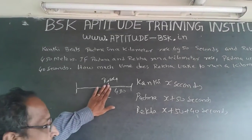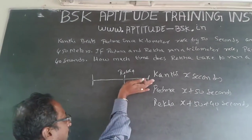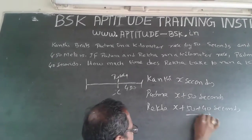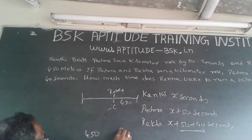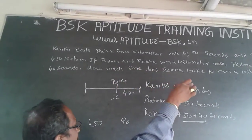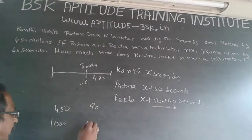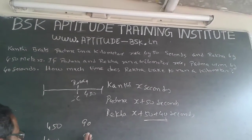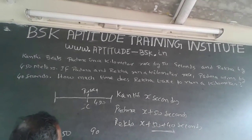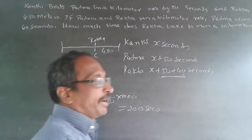When the time is X seconds, Rekha is at the 550-meter mark with 450 meters more to go. She takes 90 seconds extra to cover that 450 meters. So, for 450 meters she takes 90 seconds extra. Kilometer is 1000 meters. Using chain rule: for 1000 meters, time = 90 divided by 450 multiplied by 1000 = 200 seconds. The answer is 200 seconds.